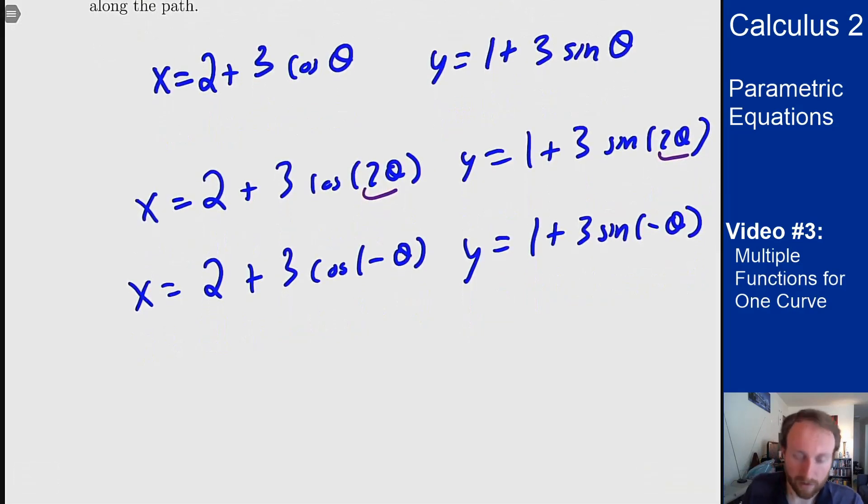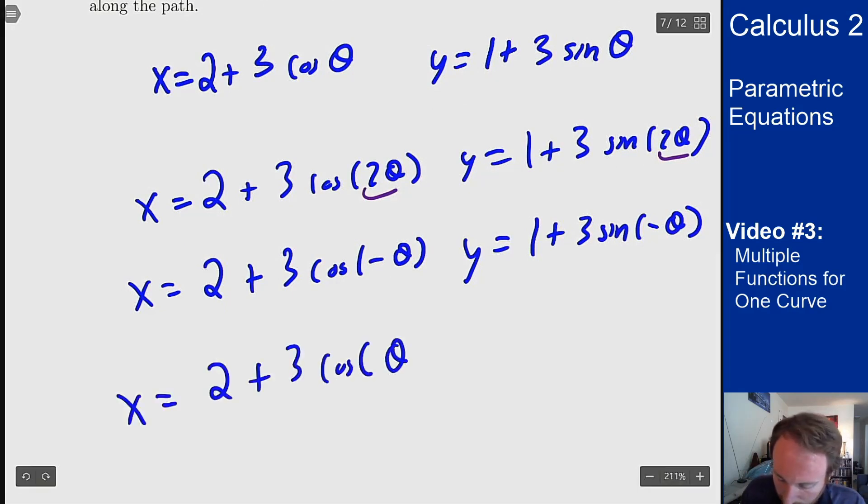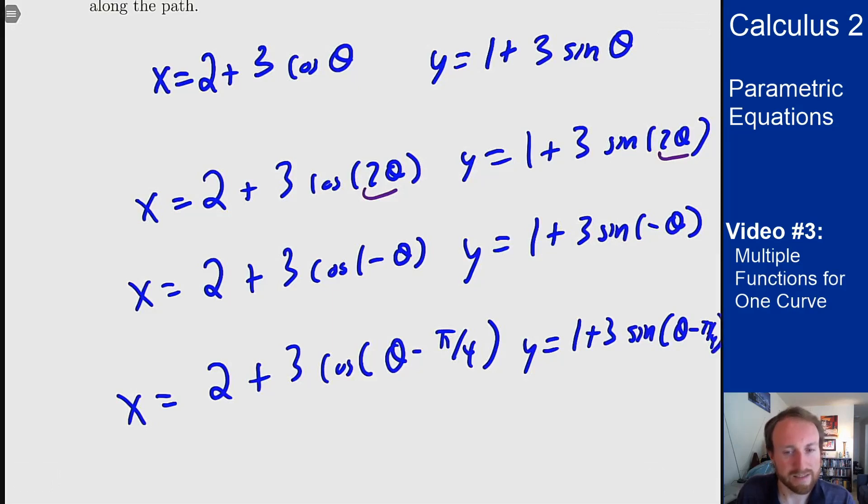I can also shift the starting point: x = 2 + 3 cos(θ - π/4) and y = 1 + 3 sin(θ - π/4). This is again the same curve, just starting somewhere else. Instead of starting at θ = 0, I start at θ = π/4 and spin that way.